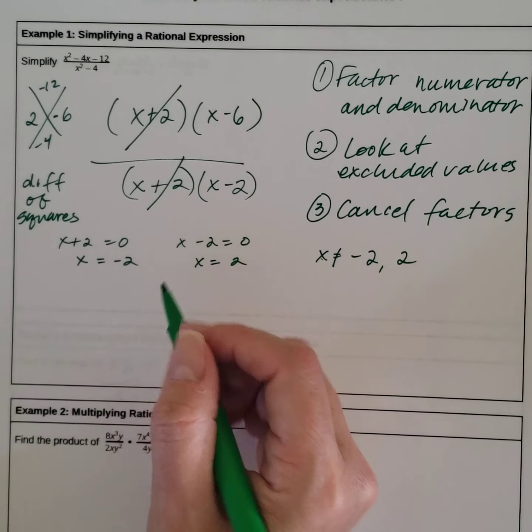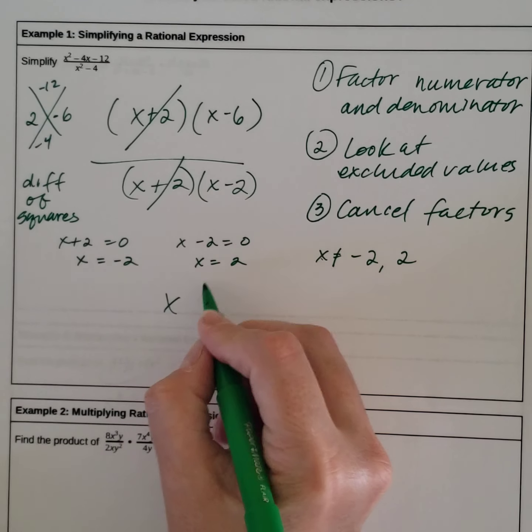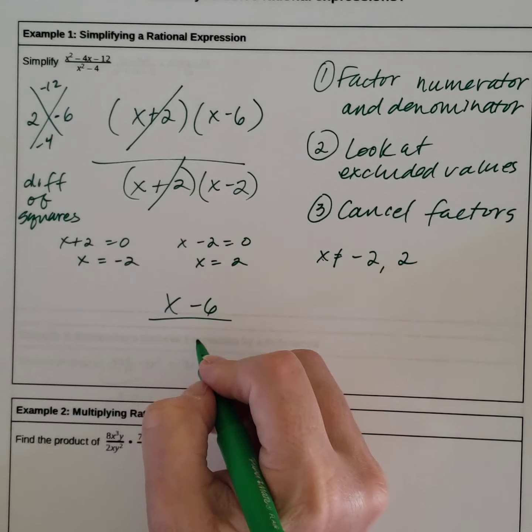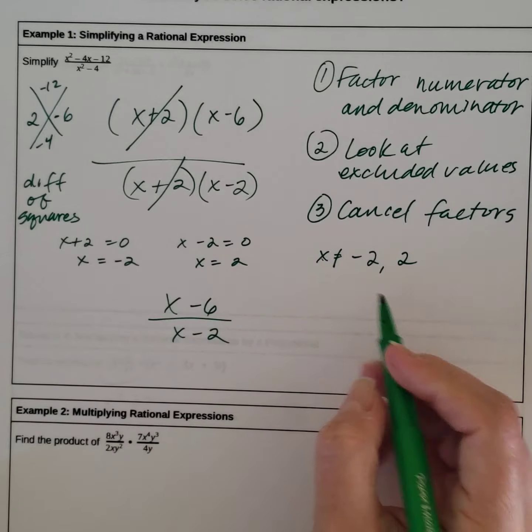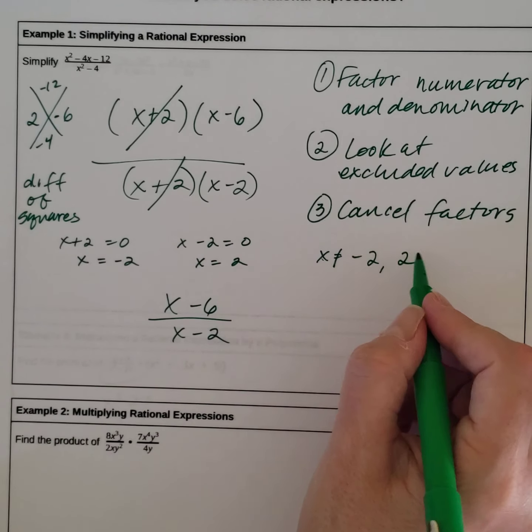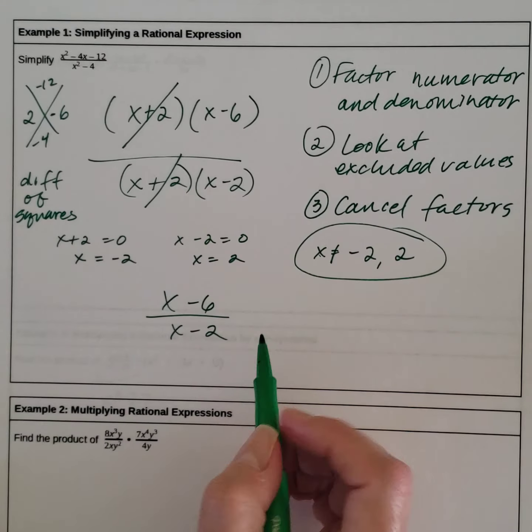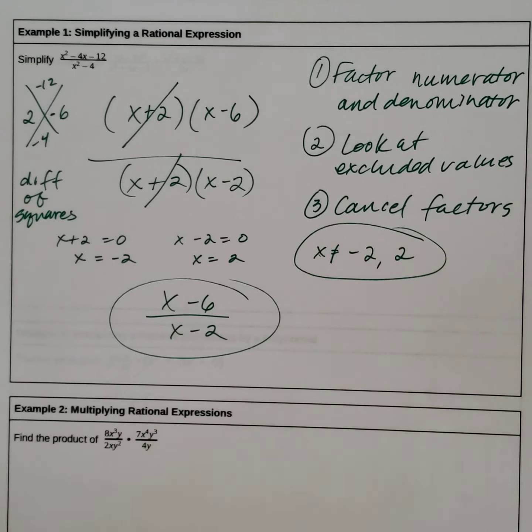So then we rewrite it: x minus 6 over x minus 2, and we make sure that we include that x cannot equal negative 2 and x cannot equal positive 2.